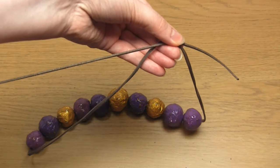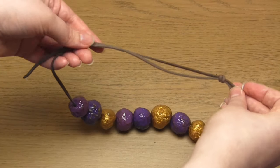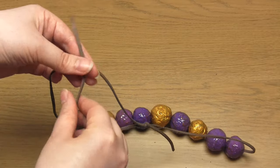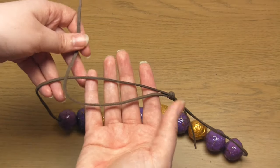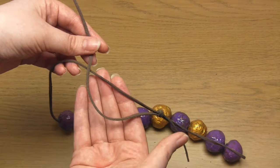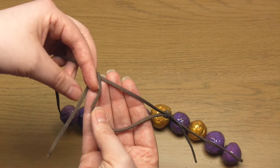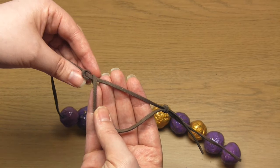You then need to do a mirror image of what you've just done. So take the end of the right hand strand and make sure it's in front of the left strand. Then wrap it around once and once more whilst moving to the left.